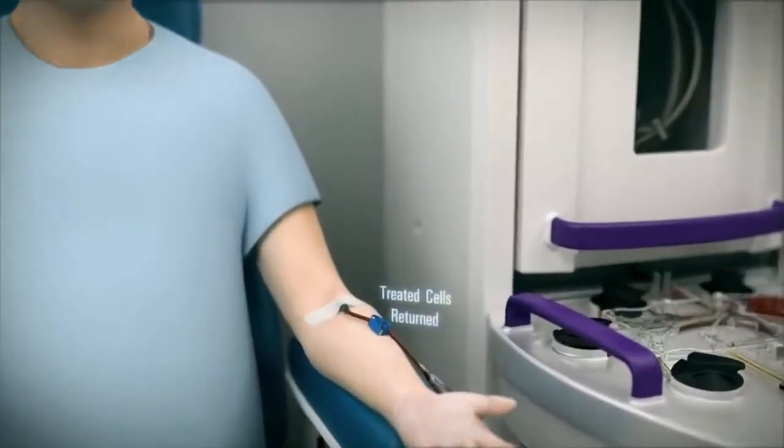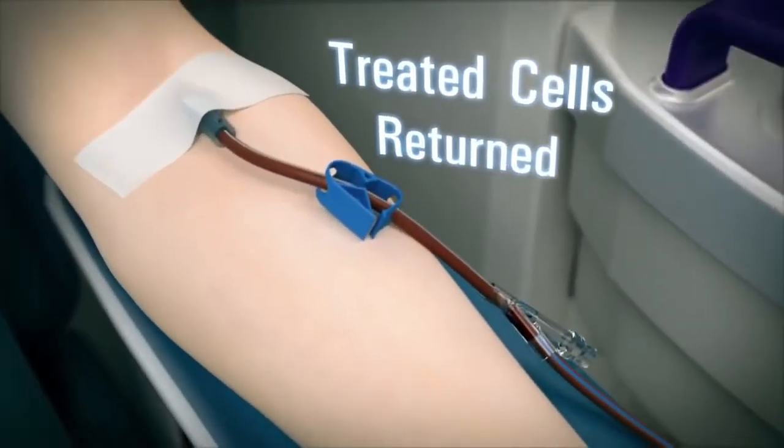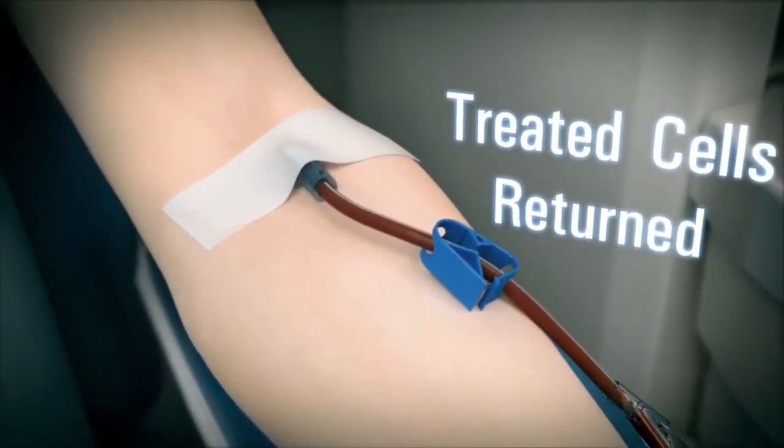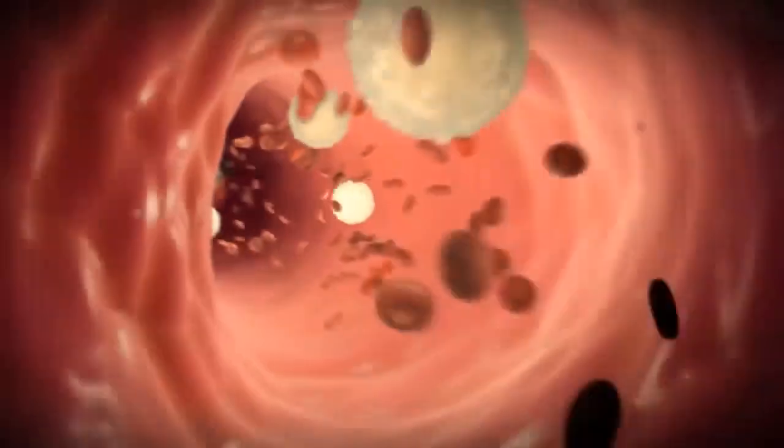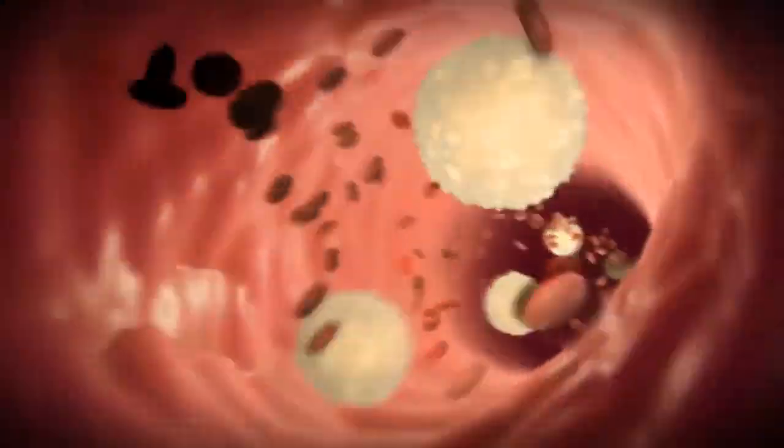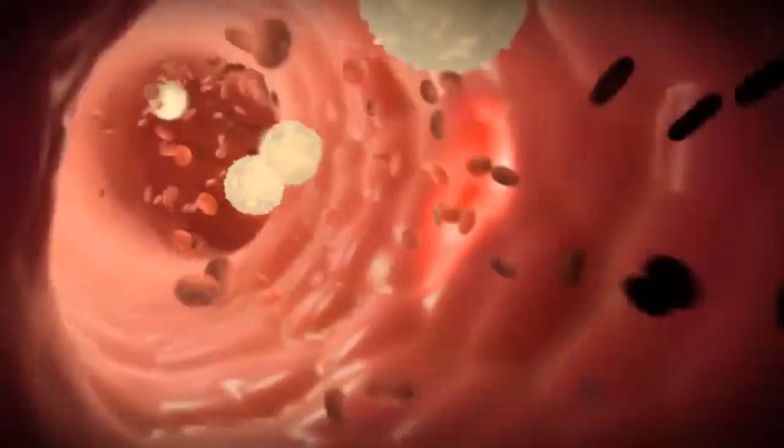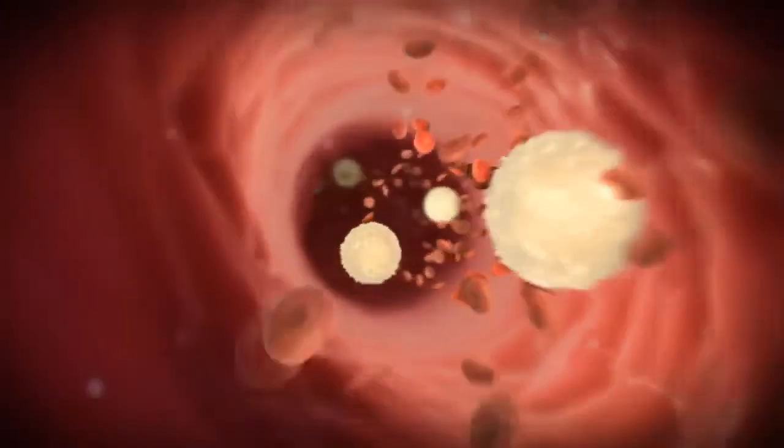The methoxalin treated buffy coat cells, now programmed for cell death, are then re-infused into the patient via the return line. Upon re-entry to the body, they begin accumulating in the liver, spleen, and the lymph nodes where they will be eliminated by resident antigen presenting cells.